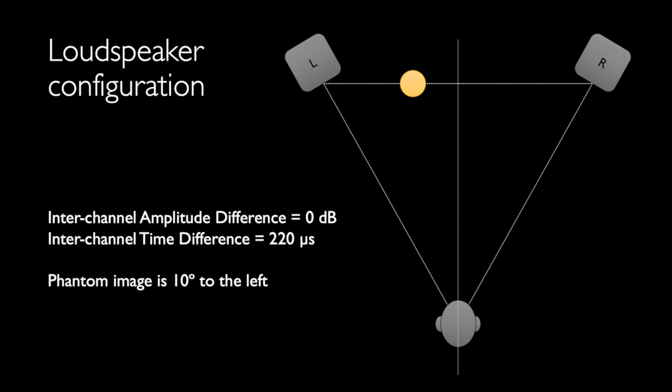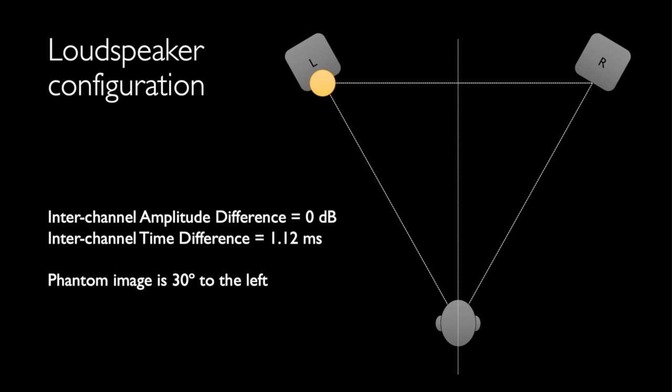Interchannel delay panning 10 degrees left: the interchannel amplitude difference is zero decibels, and the right channel is delayed relative to the left channel by 220 microseconds. The image should appear 10 degrees to the left of center, or one-third of the distance to the left loudspeaker. Interchannel delay panning 20 degrees left: amplitude difference zero, right channel delayed by 440 microseconds. Interchannel delay panning 30 degrees left: amplitude difference zero, right channel delayed by 1.12 milliseconds. The image should appear 30 degrees to the left of center, in the left loudspeaker.